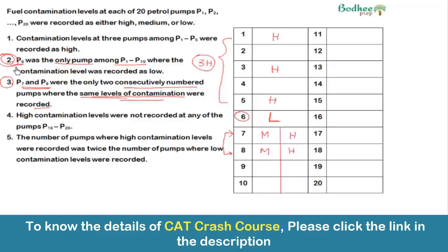Since P6 is the only low pump in P1 to P10, pumps P2 and P4 must be medium. For pumps P7 to P10, in Case 1 both P7 and P8 are medium, so P9 is high and P10 is medium. In Case 2 both P7 and P8 are high, so P9 is medium and P10 is high.